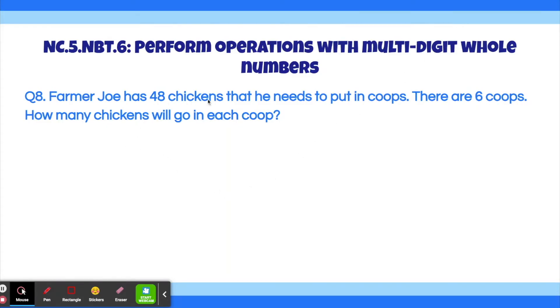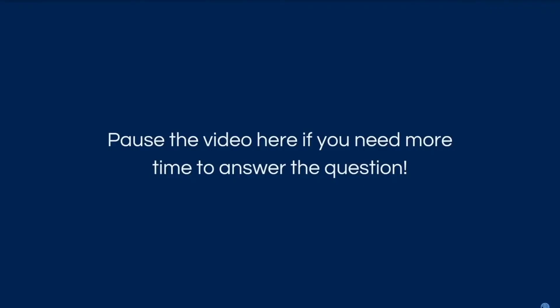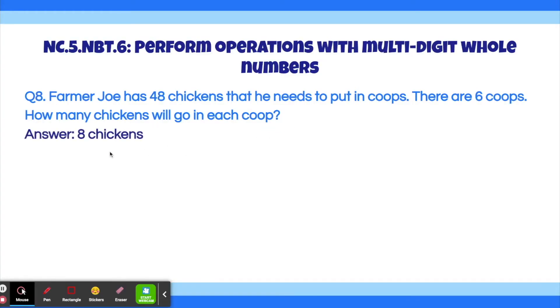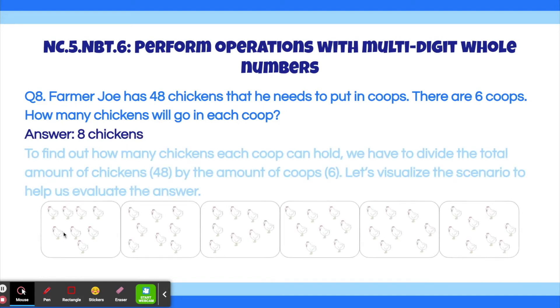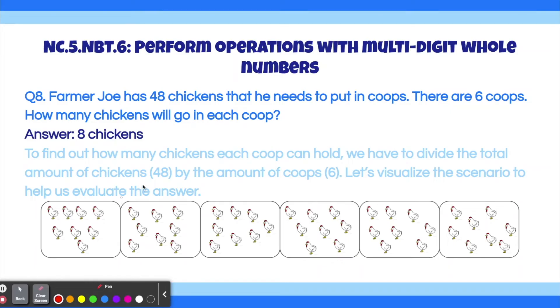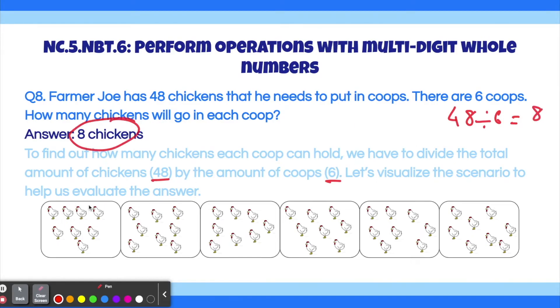Question 8. Farmer Joe has 48 chickens that he needs to put in coops. There are 6 coops. How many chickens will go into each coop? The answer is 8 chickens. To find how many chickens each coop can hold, we divide the total chickens, 48, by the number of coops, 6. Here the 6 rectangles represent our 6 chicken coops, and we divide 48 chickens equally. 48 divided by 6 equals 8, so there are 8 chickens in each coop.